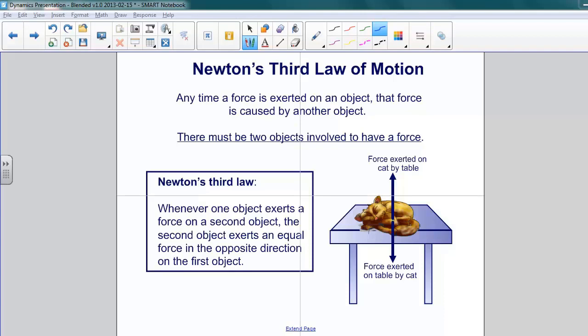Imagine if you're trying to push on somebody, but they keep moving away so you can't really push on them, then you can't really exert a force on them. So they need to be there pushing back. They have to be present for you to be able to even exert a force. Newton's Third Law states: whenever one object exerts a force on a second object, the second object exerts an equal force in the opposite direction on the first object.